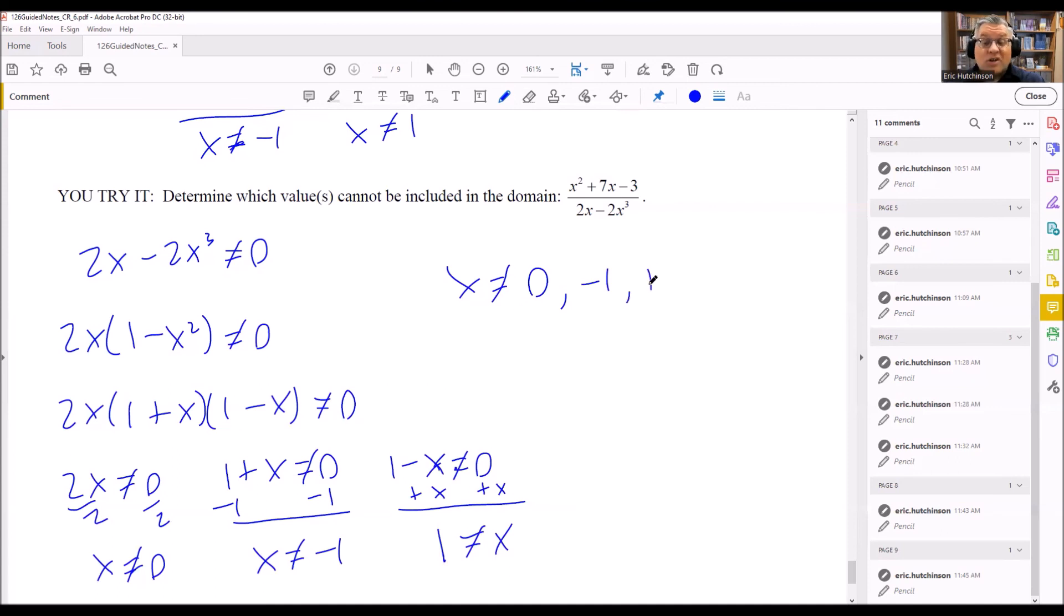Those are the numbers that would cause division by zero. So anything that causes division by zero is not allowed in your domain. So any other number here will work. It's just that I can't put these three numbers in there. Otherwise, I get division by zero, so it would cause it to be undefined. And for domain, we only want the numbers that make the expression defined.